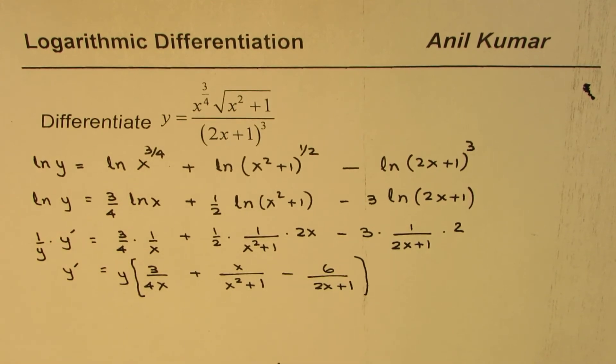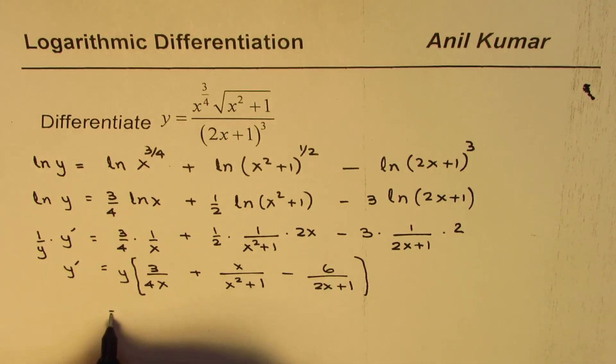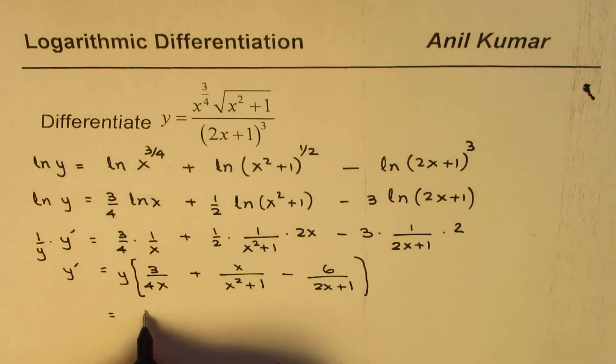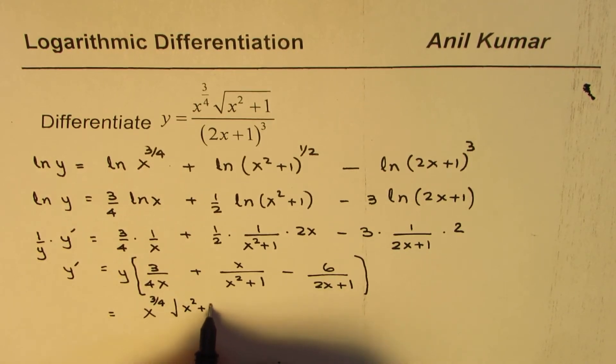Now what is y? We can substitute this back. So we can write our answer as: y is x^(3/4) times √(x² + 1) divided by (2x + 1)³...